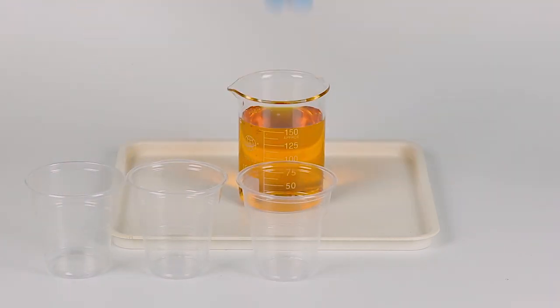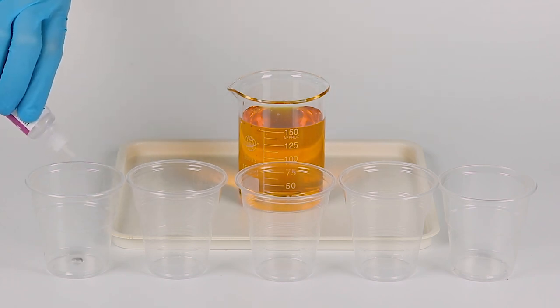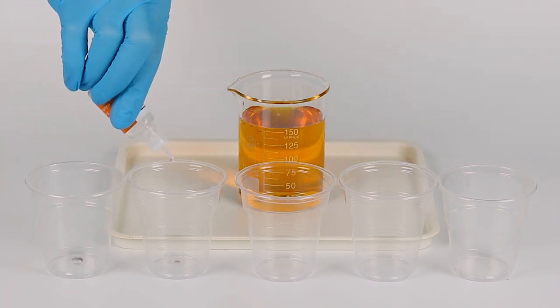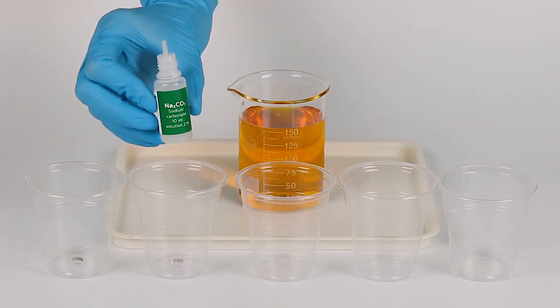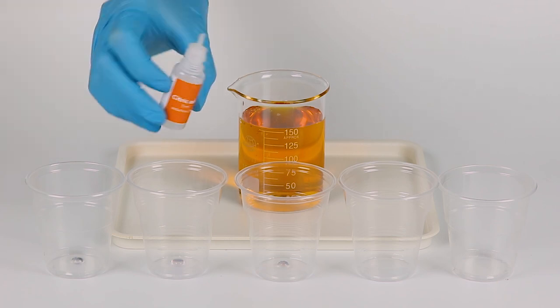Now take five disposable cups and add five drops of sodium hydrogen sulfate into the first cup. Then add five drops of citric acid into the second cup. Add five drops of sodium carbonate and five drops of citric acid into the third cup.